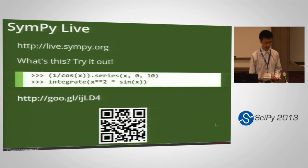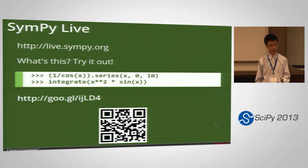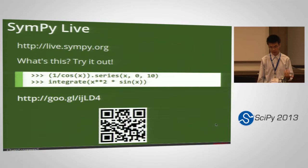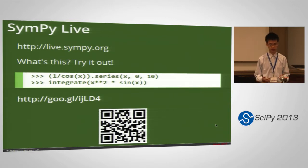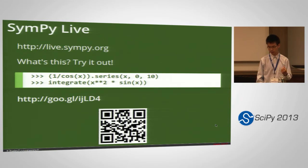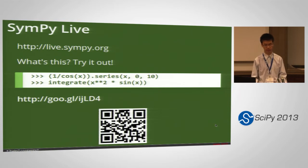The first application is SymPy Live. It's basically just a Python console that runs in your browser, except we've added some extra features that make it nicer for users who are interested in mathematics. It has LaTeX output, so users who are more familiar with mathematical notation will be better able to read the output of the console. There's also tab completion and so on.